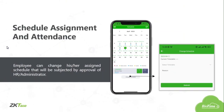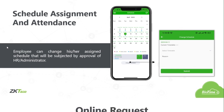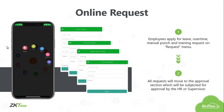Schedule assignment and attendance — employees can change their assigned schedule, which will be subject to approval by the HR or administrator on their mobile phone. Online requests — employees apply for leave, overtime, manual punch, and training requests through the request menu. All requests will then move to the approval section, which will be subject to approval by the HR or supervisor.